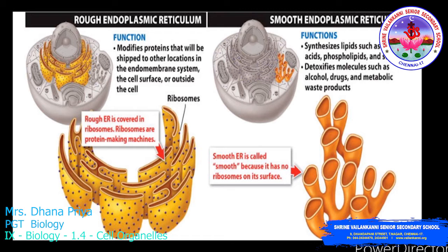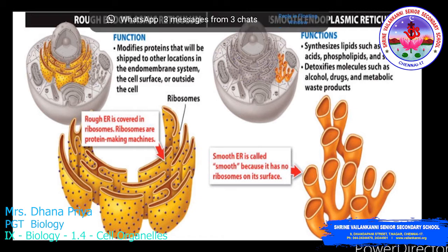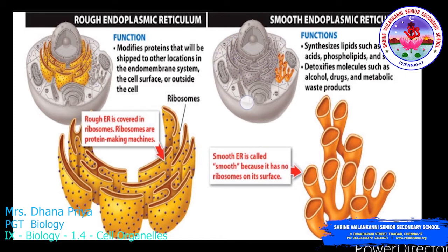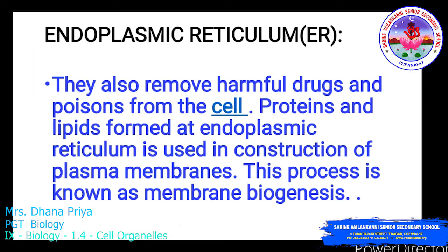The rough endoplasmic reticulum modifies proteins that are shipped to other locations in the endomembrane system, the cell surface, or outside the cell. Smooth endoplasmic reticulum synthesizes lipids such as fatty acids, phospholipids, and steroids, and detoxifies molecules such as alcohol, drugs, and metabolic waste products. The proteins and lipids formed by the endoplasmic reticulum are used in the construction of the plasma membrane, a process known as membrane biogenesis.